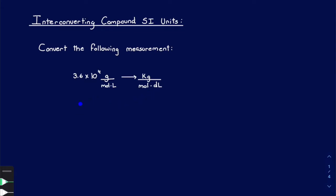What I like to do is set up two different conversions to make sure I'm not messing up. Once you get more advanced and comfortable with this process you can set it all up in one go and do one whole calculation. But for now, so you can actually see how it works, let's do one step at a time. Let's start by writing what we already have — 3.6 times 10 to the 4 grams over moles per liter — and we're going to go from grams to kilograms first.